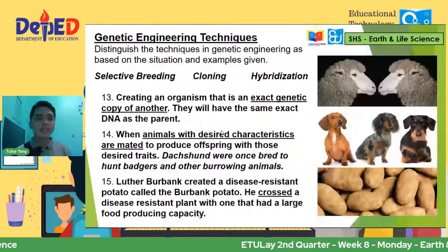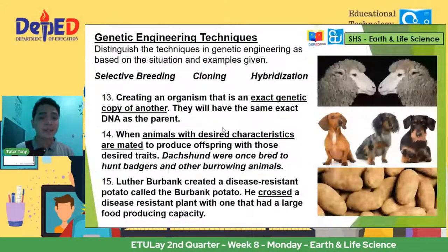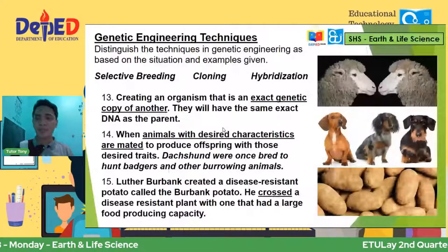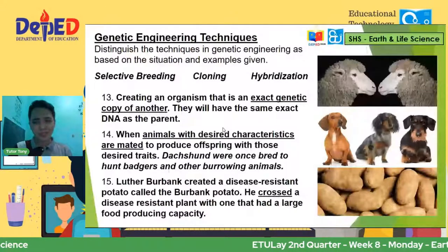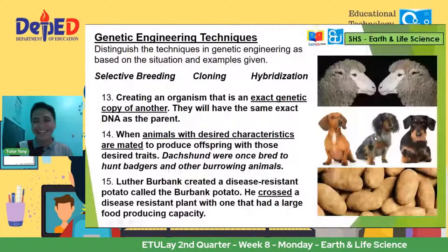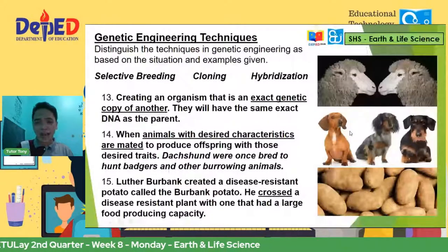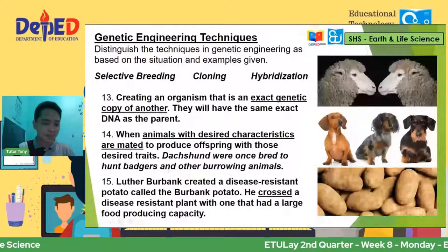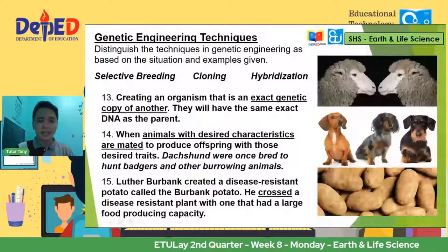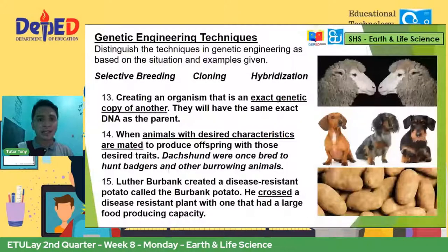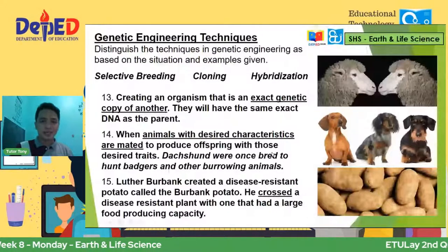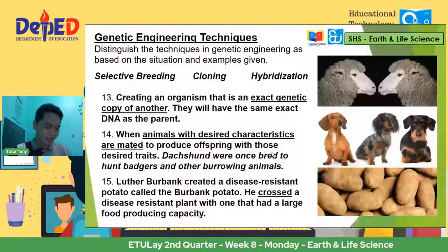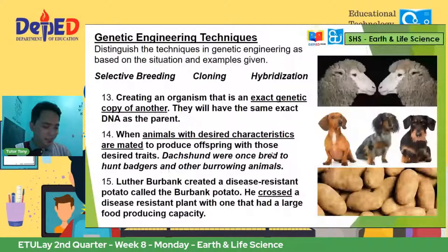Fourteen: when animals with desired characteristics are mated to produce offspring with those desired traits. So pinag-breed ang two types ng dogs para makapag-produce ka ng dachshund. Ang physical characteristics nila, mahaba, elongated sila, and they are very small dog breeds. Anong genetic engineering technique kaya ang ginamit? Yung desired characteristics pinili, pinag-mate, and then nakapag-produce — that is selective breeding. Angel is correct, Analiza is correct, Josh is also correct.